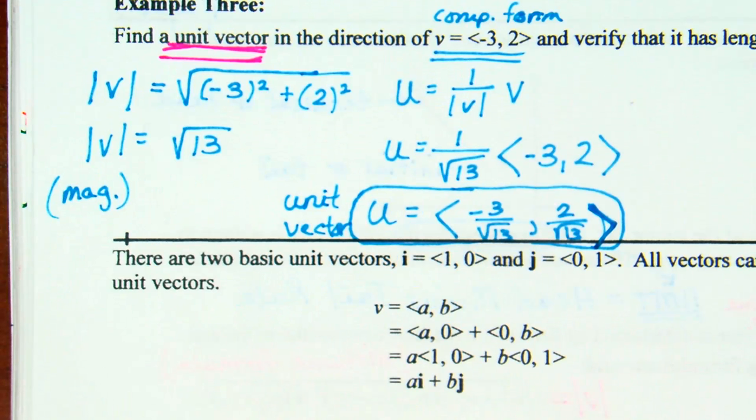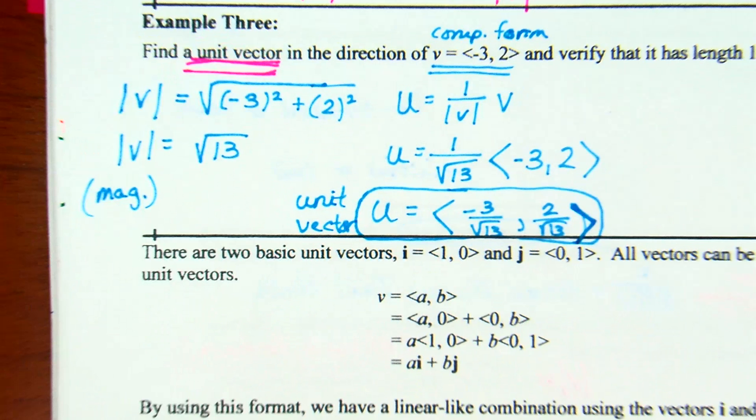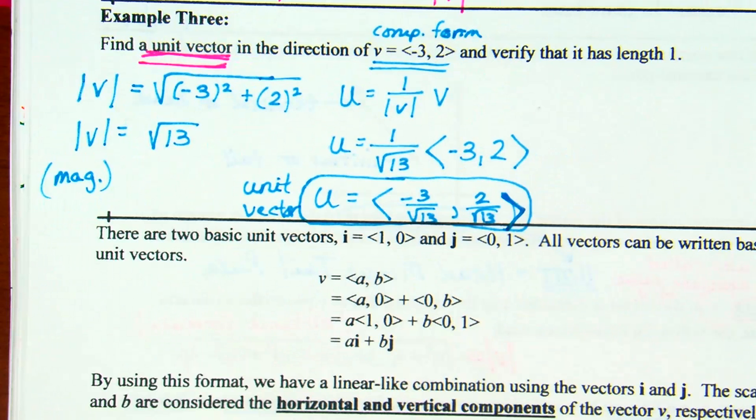Be careful not to use parentheses if we're talking about component form — use the less-than/greater-than signs instead.